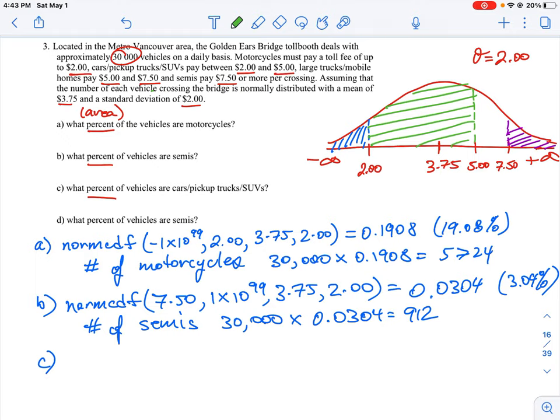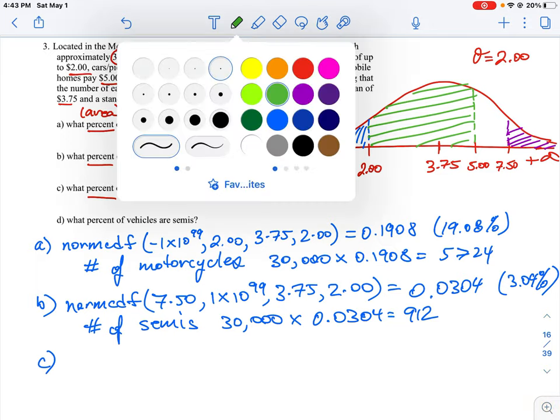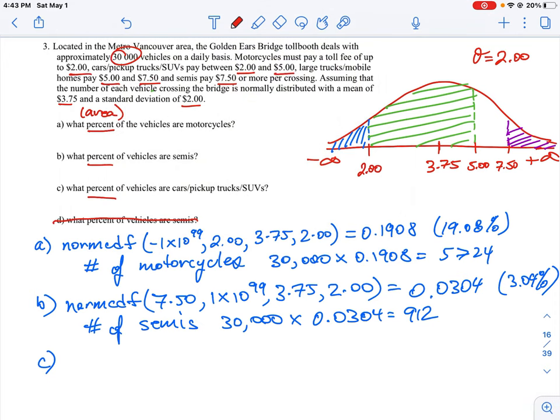You do have the function that takes the lower limit and upper limit, so you should be able to plug those two numbers in along with the mean and standard deviation, and that will give you the area which is the interval between those two. I think part d was a bit of a mistake—it looks like they asked the same question twice about semis. The other question they missed is what percentage are large trucks, which are the area between $5.00 and $7.50. There are essentially four different questions that could be asked. You just use the same function to calculate the area by using the lower limit and upper limit. Realize there could have been an extension where instead of asking for just the percent (which is just area), they could ask for the number of vehicles, which is just one more step where you multiply that percent by the 30,000.